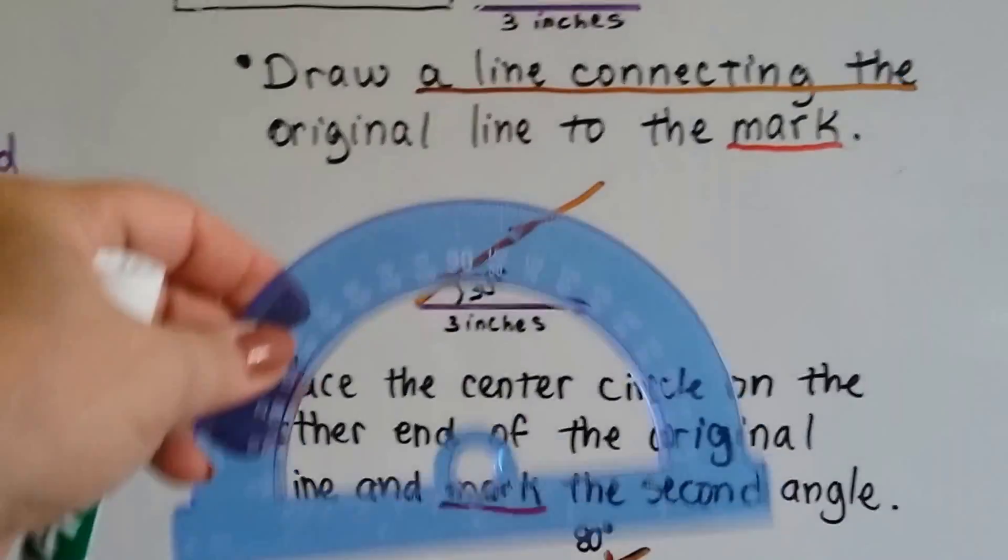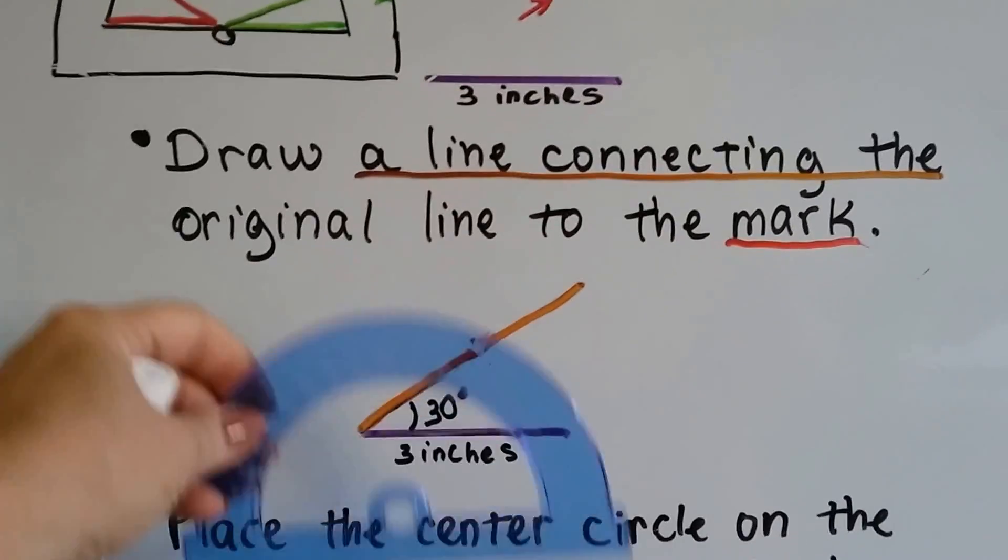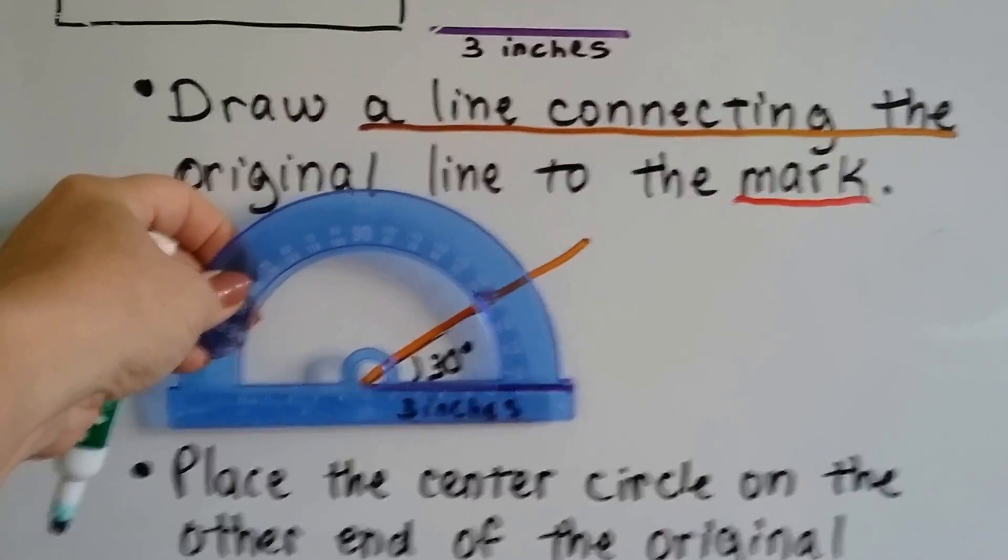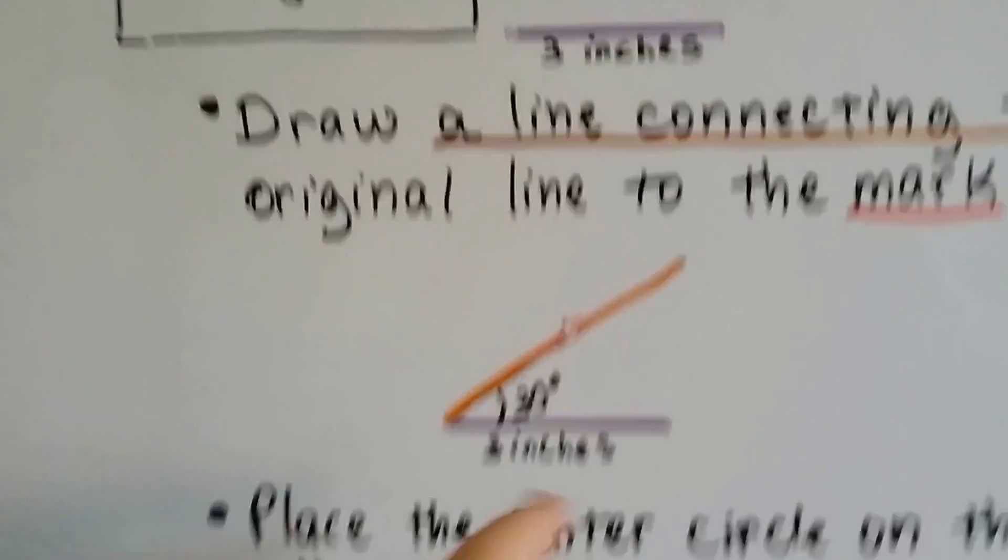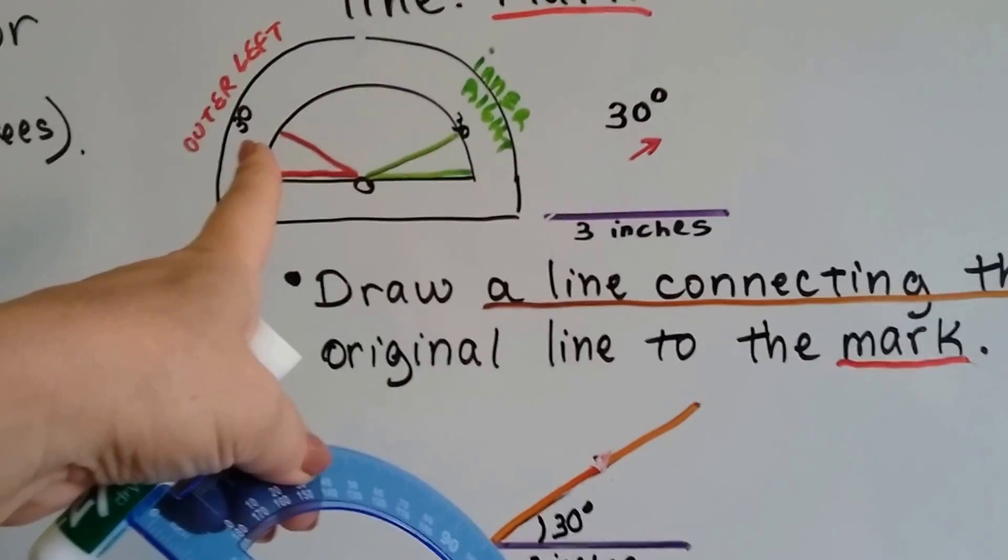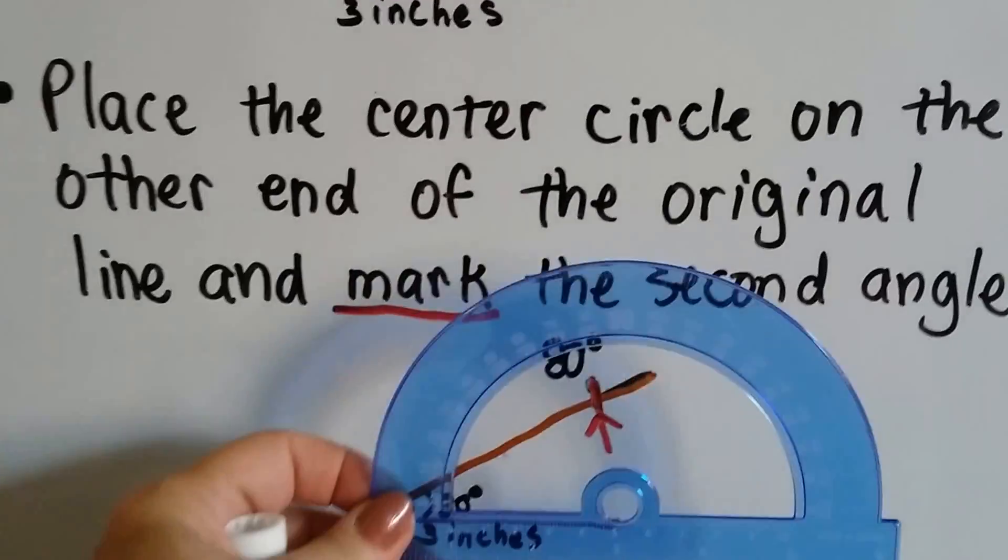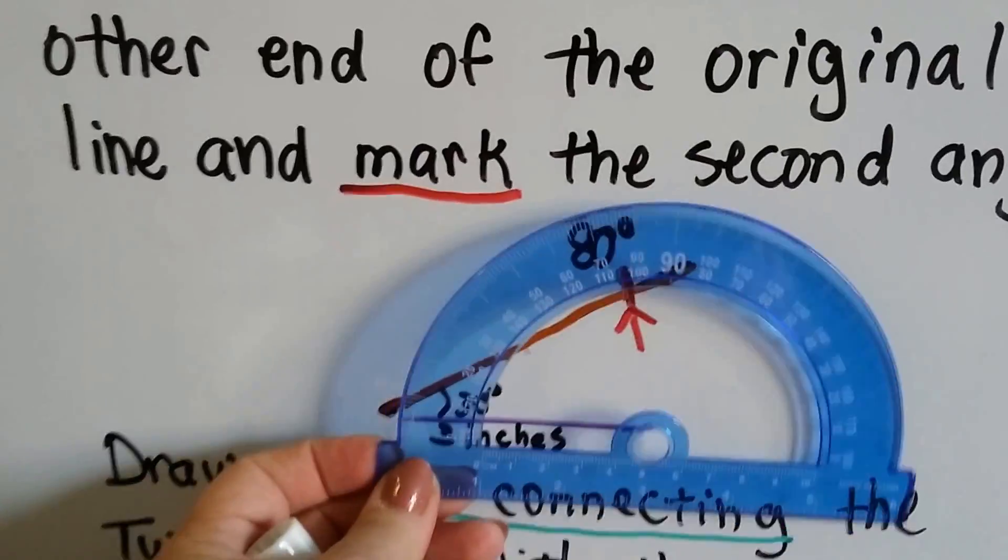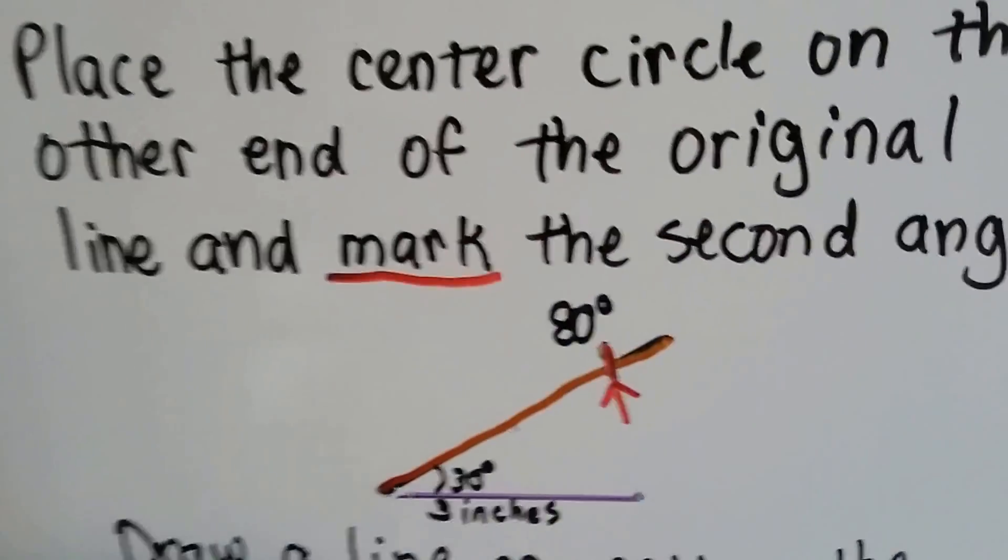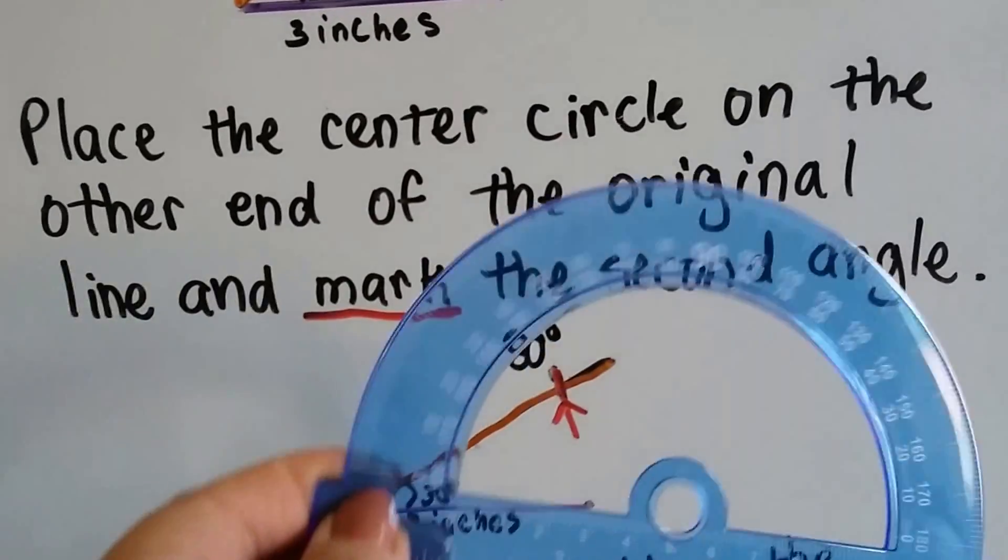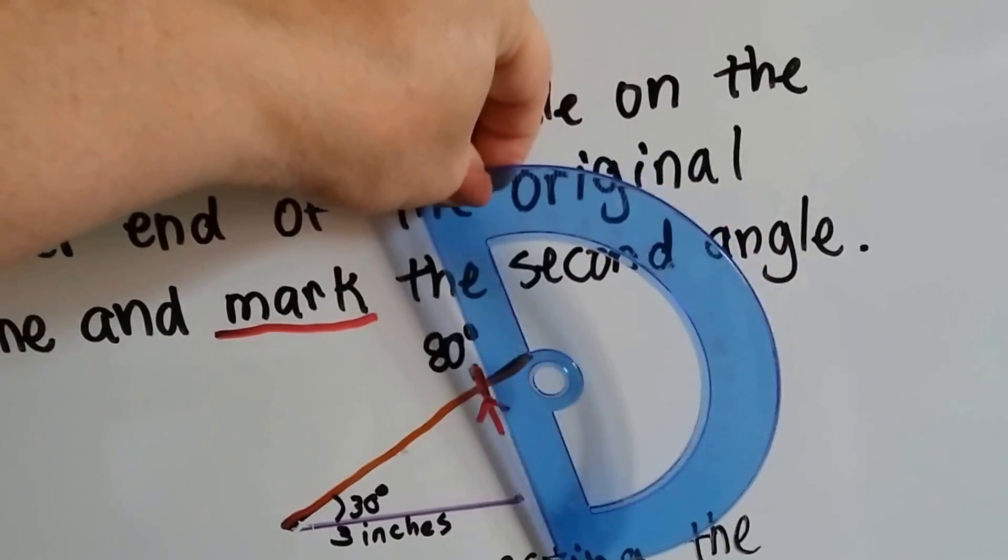To make the other angle, we use the other side of the line. Remember, we first lined it up on this side and we marked our 30 degree angle. Now we're going to put it on this side of the line, the other side. Which means we need the outer numbers because it's going to open to the left. So, we put this on the other side of the line, on the right hand side, and we mark where 80 degrees is on the outer edge of the protractor.